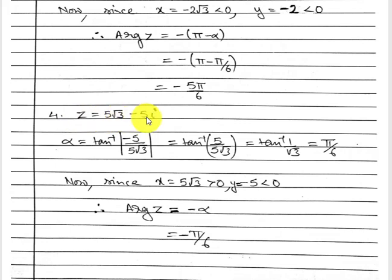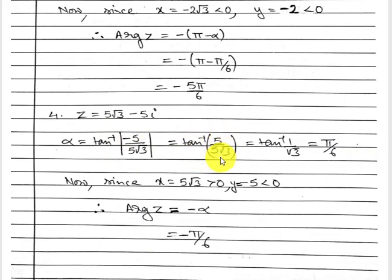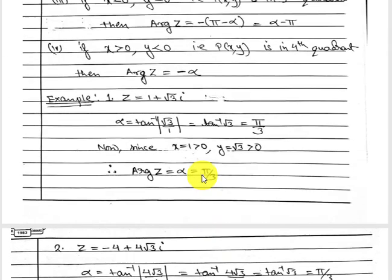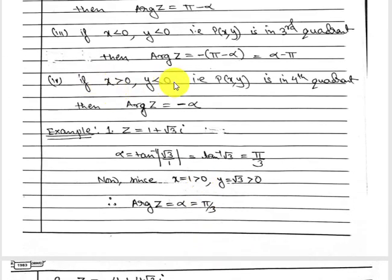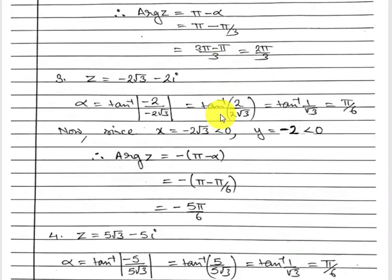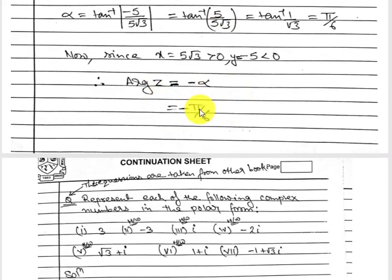Next: z = 5√3 − 5i. Step one: α = tan⁻¹(|−5 / 5√3|) = tan⁻¹(1/√3) = π/6. Step two: x is positive and y is negative, so this lies in the fourth quadrant. For the fourth quadrant, the argument equals −α, so the argument is −π/6.